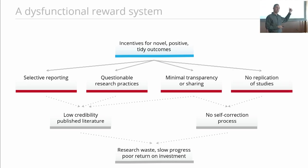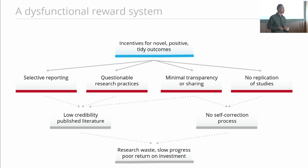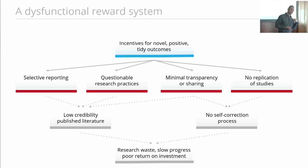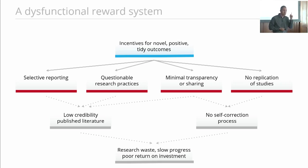There's little reward for being transparent or sharing. In fact, there's a disincentive for me to be transparent with how I got to my findings, because if you can interrogate my data, you're more likely to find errors, and I need you not to find the errors to get the reward in the current system. And likewise, there's no reason for me to replicate your work because replications aren't rewarded. There's no incentive for me to replicate my own work because all I can do is lose a finding that I already have.